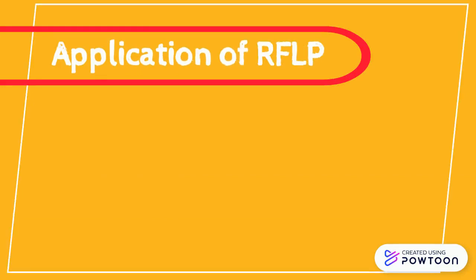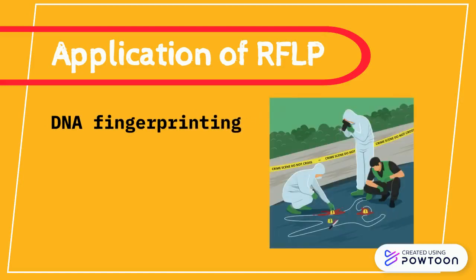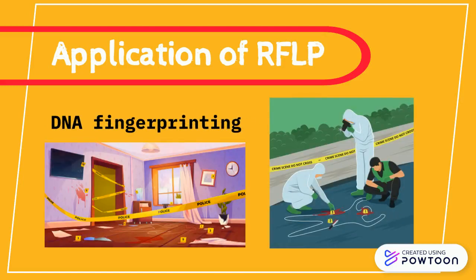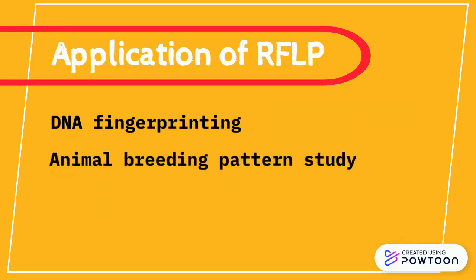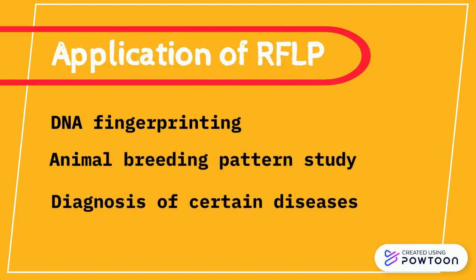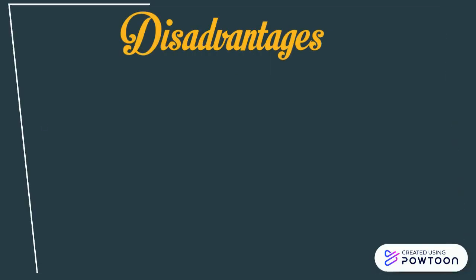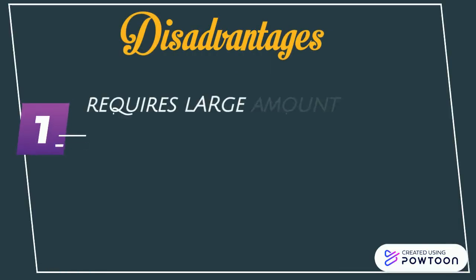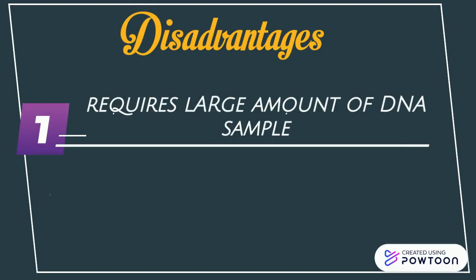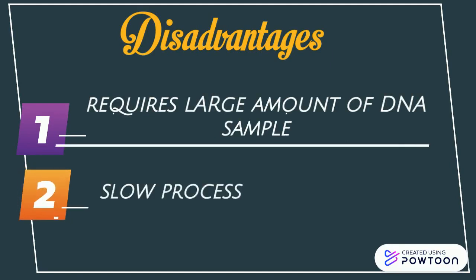There are many uses of RFLP besides paternity testing. One of them is DNA fingerprinting, which is used to identify suspects based on evidence samples collected at the crime scene. RFLP is also applied in studying breeding patterns in animal populations and diagnosis of certain diseases. Unfortunately, the RFLP analysis technique is tedious and slow. It requires a large amount of DNA sample, and the process from probe labeling to washing and autoradiography can take up to a full month to complete.